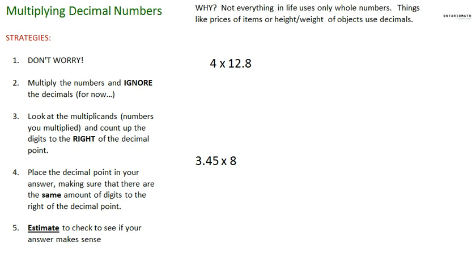It's easier for you to see it in action and I'll just tell you the strategies as I go along. So we're gonna start off by doing 4 times 12.8, or twelve and eight tenths. Step one: don't worry, relax. Just because there's a decimal number here, it's not going to change very much at all.